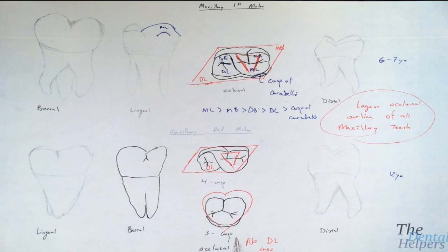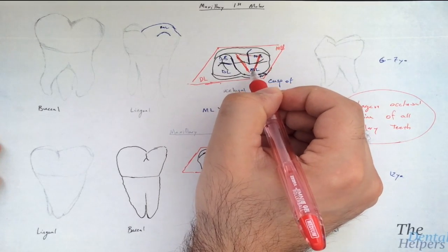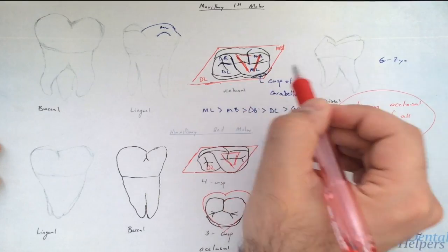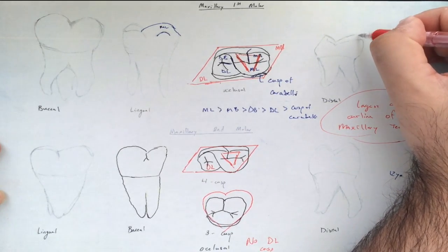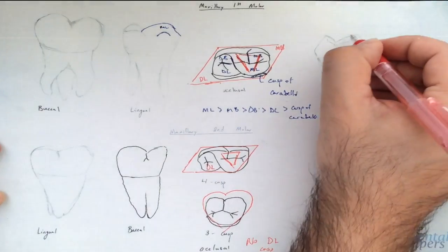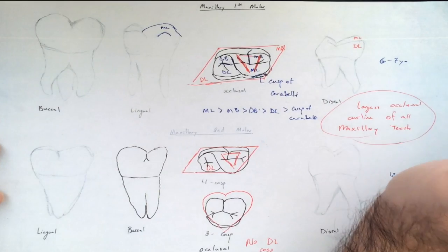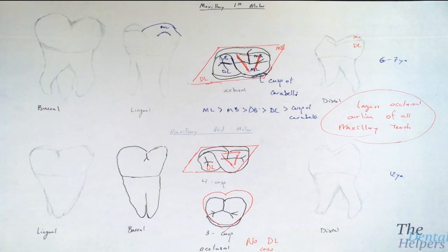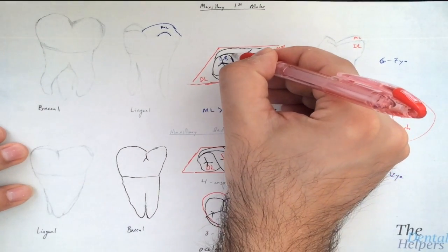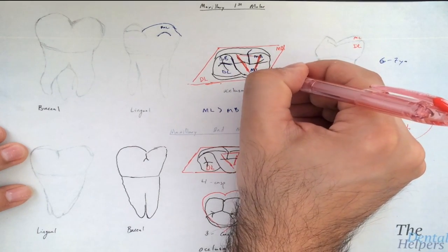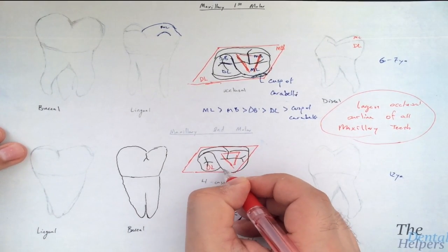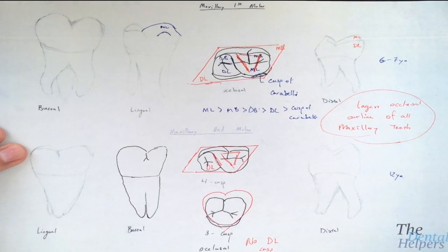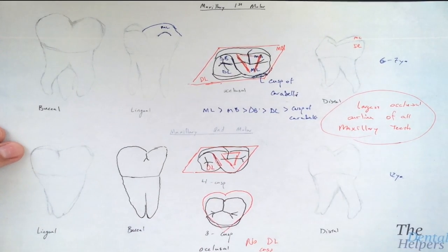The distal lingual cusp is slightly smaller than the mesial lingual cusp in terms of cusp height. There is a slight difference between these two lingual cusps. Also, the oblique ridge runs diagonally from the mesial lingual cusp to the distal buccal cusp. If you look at a real tooth, you can see this diagonal line across the tooth — that's the oblique ridge, and it's a key feature to know.